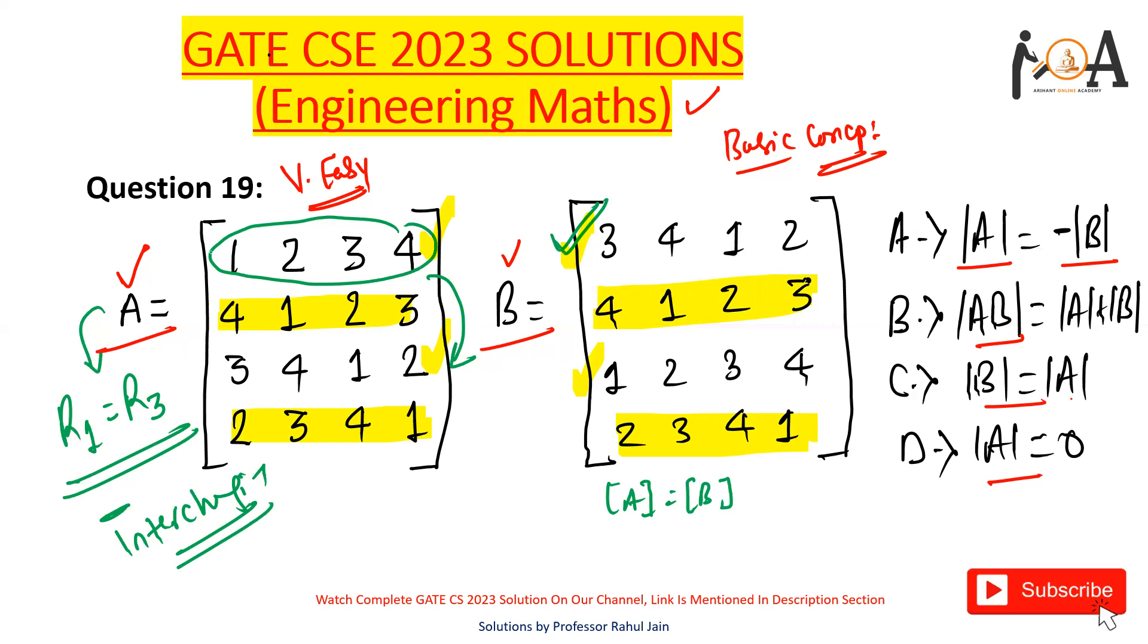So if you consider the determinant, then determinant of A and determinant of B would be like determinant of A equals negative of determinant of B, or you can say that determinant of B equals negative of determinant of A, because we have performed an interchange and due to which just the sign would get changed and the rest of the thing will remain exactly same.